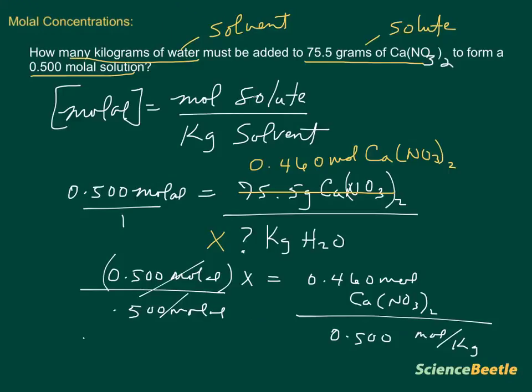Our X value, after we do this math, what we need to do is take 0.460 divided by 0.500, and that will give us a molal's answer of 0.92. What happens here is the moles are going to cancel, so what we're left with here are going to be kilograms. And this is going to be kilograms of water that is needed.